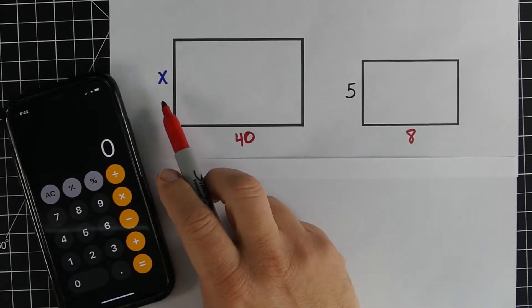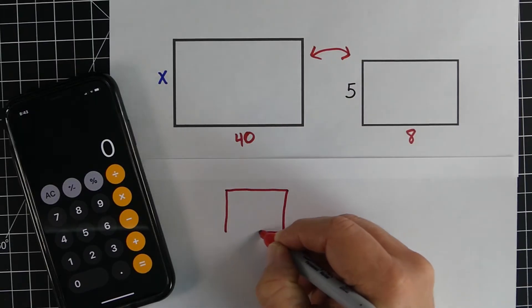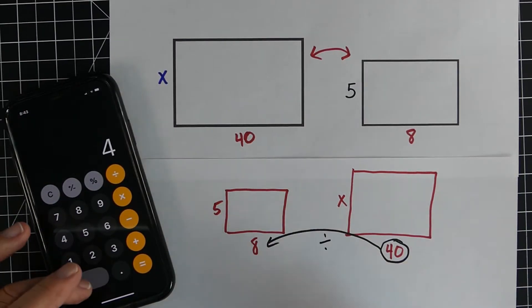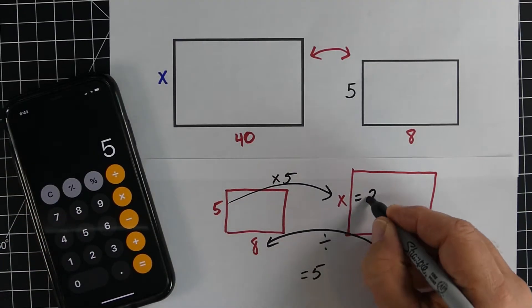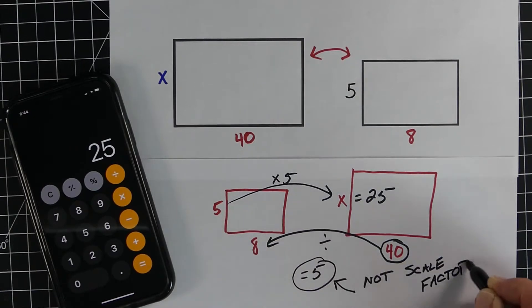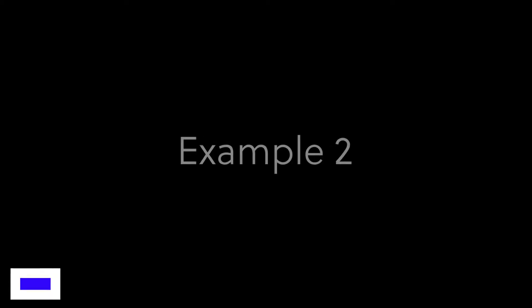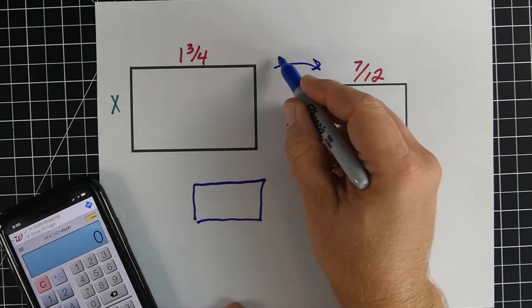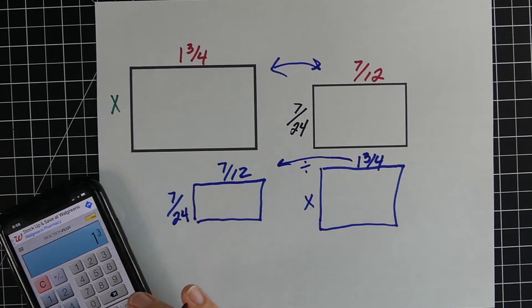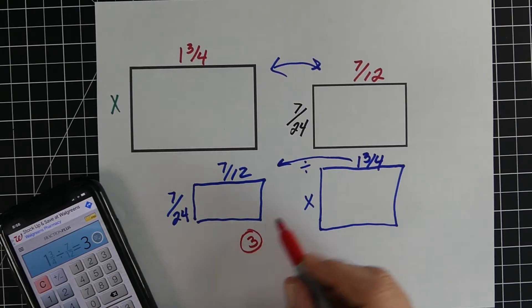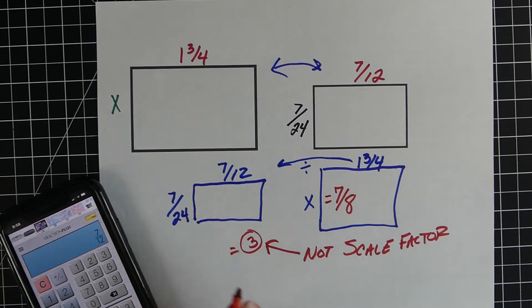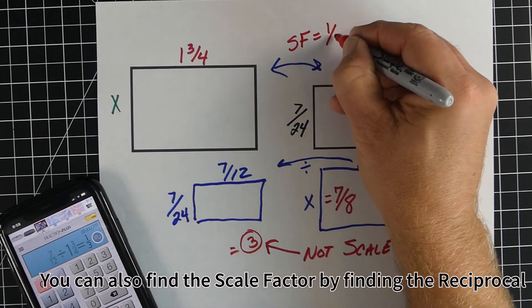A little hack: if you don't like finding the missing side on the left, you can just flip the two objects — put the scaled object on the left and the original on the right, so now the missing side is on the right-hand side. For some people this is easier. Take 40 divided by 8 to get 5, then multiply 5 by 5 to get the missing side of 25. It's important to understand that 5 is not your scale factor — it's actually 1/5 or 0.2. Same approach for the rectangles: redraw and flip the sides, take 1 and 3/4 divided by 7.12 to get 3, then 3 times 7.24 gives 21.24 or 7.8. You can put a 1 over that number to get the actual scale factor of 1/3.